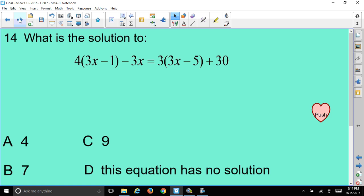Alright, let's move on. What is the solution to 4 times 3x minus 1 minus 3x equals 3 times 3x minus 5 plus 30? Alright, so multiple choice. So let's get busy in doing this question.